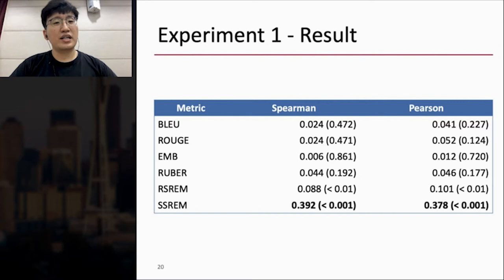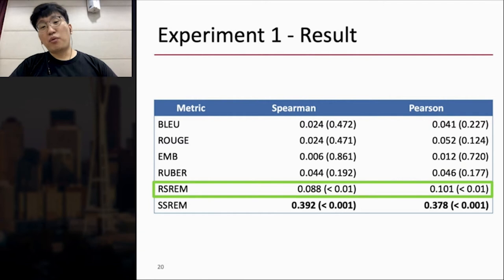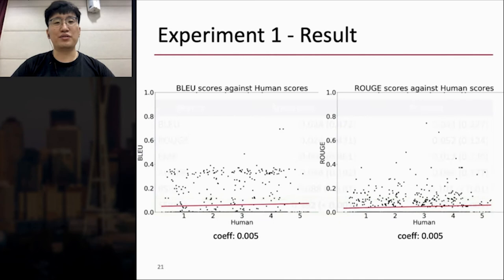So this table shows the result. Each number means correlation and the p-values are shown in the bracket. First, BLEU, ROUGE, Embedding are not correlated with human scores. RUBER shows a higher correlation with human scores than other baselines, but has a high p-value, that means low significance. RSREM performs better than RUBER, since RUBER uses only one negative random sample. Finally, SSREM outperforms all other methods for two correlations with low p-values.